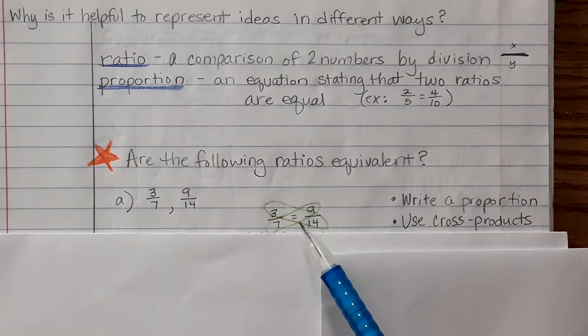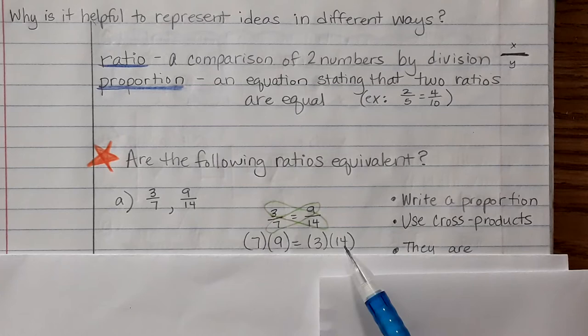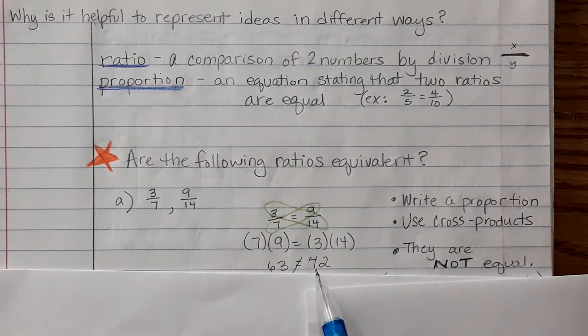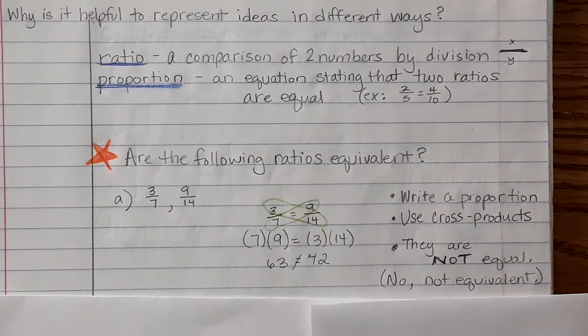So you can see here in my green, 7 times 9 and that equals 3 times 14. So write a proportion and then in green these are my cross products listed here. And now multiply. When I multiply I get 63 on the left, 42 on the right, and they are not equal. So therefore they are not equivalent.